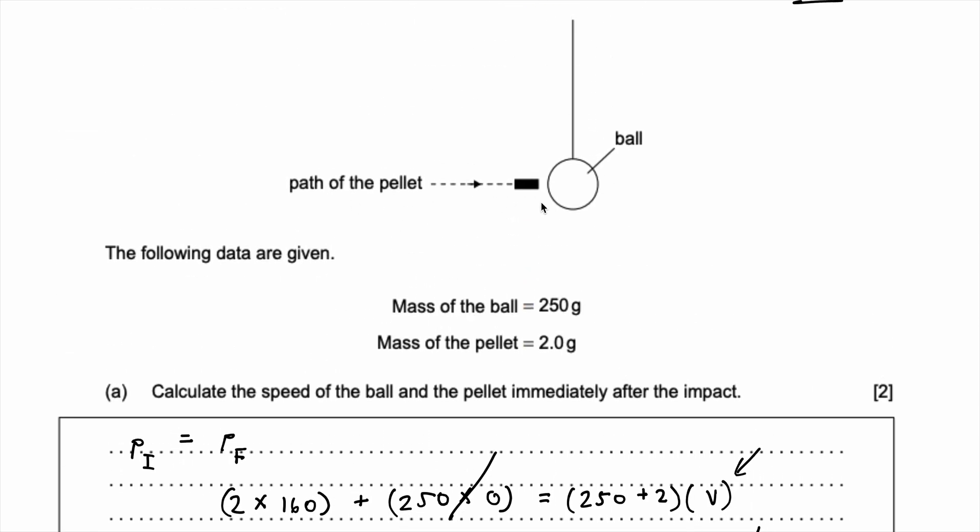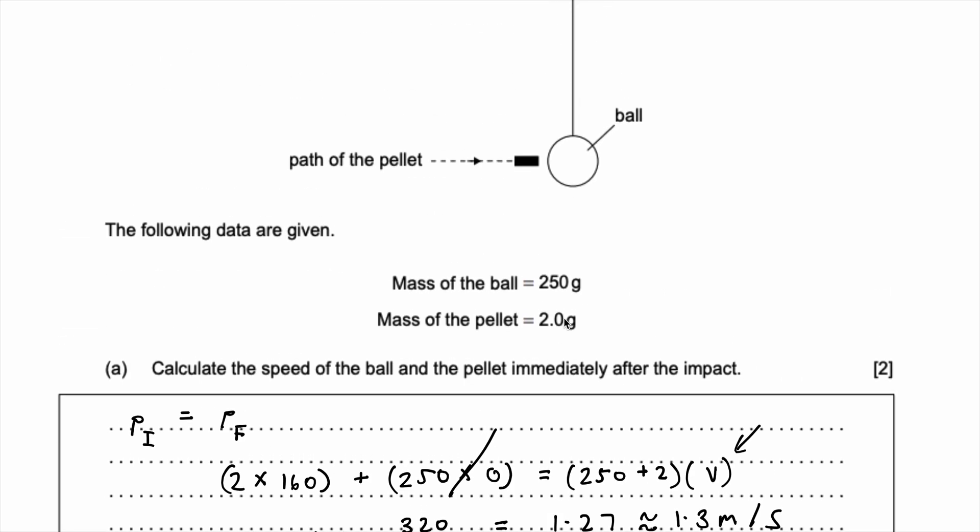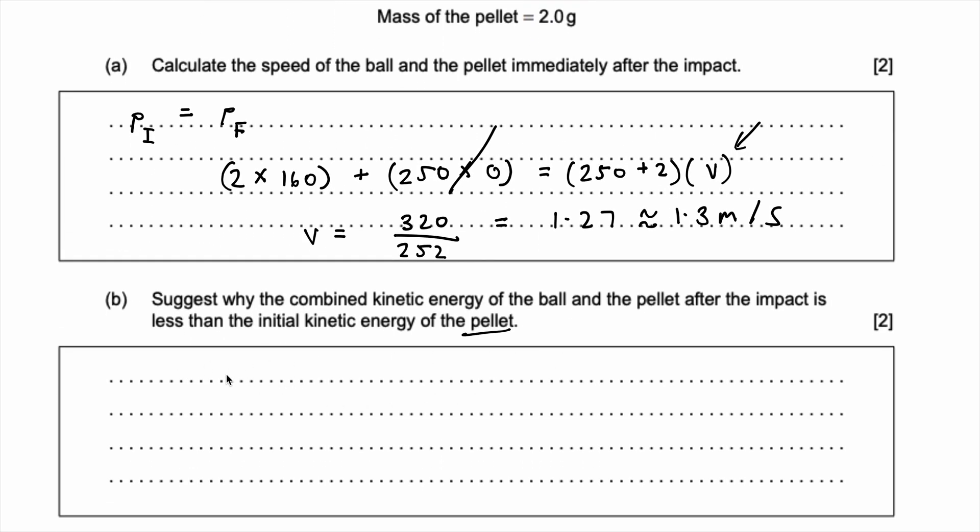The pellet travels through the air and when it comes in contact with the ball some work is done to penetrate the ball. And when work is done there is some transfer of energy. So some of the kinetic energy of the pellet is transferred into other forms of energy such as internal or thermal energy, and so that's the reason why the energy after the collision or the impact is less than the initial kinetic energy.